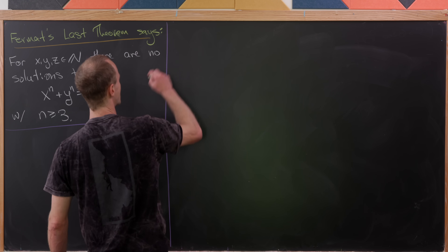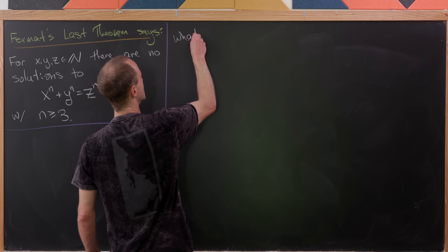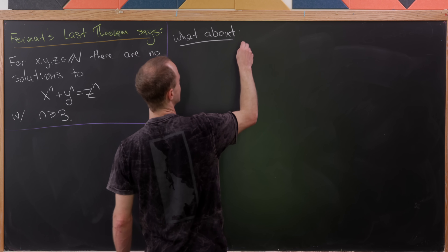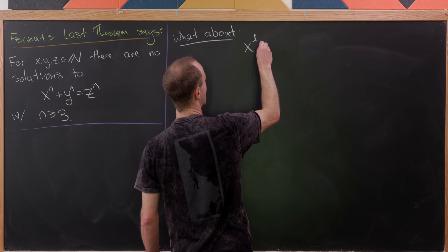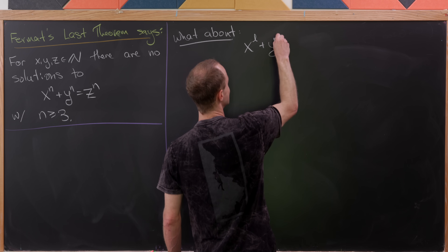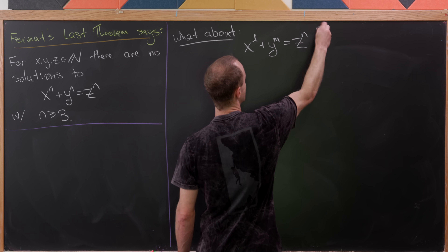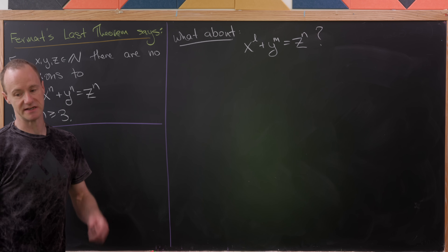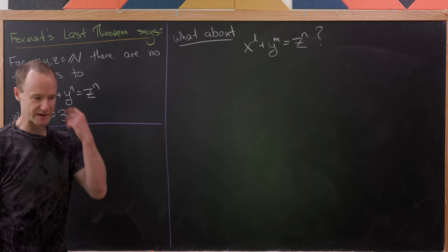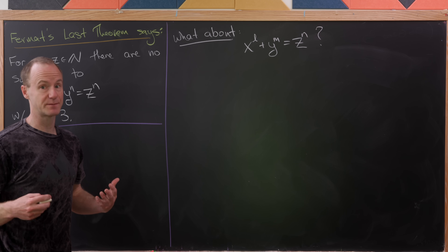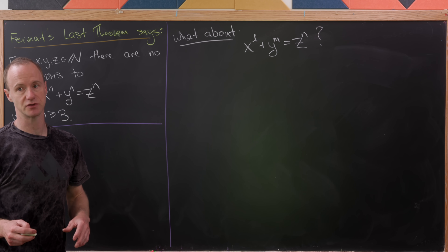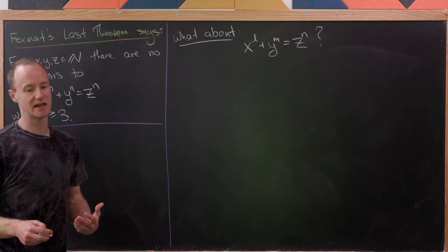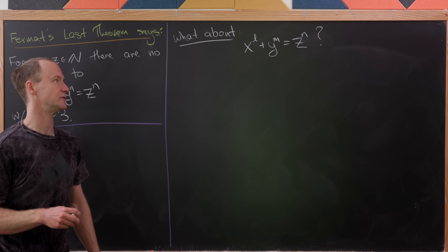Now what I want to do is look at a related equation: what about x to the l plus y to the m equals z to the n? In other words, what if all those exponents are different? So can we decide when it's possible for this equation to have solutions, and maybe exhibit some solutions in a special case or two?